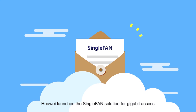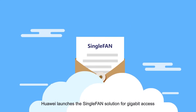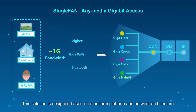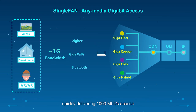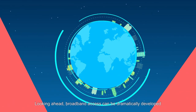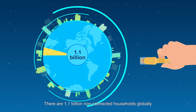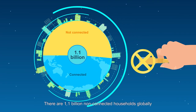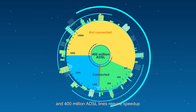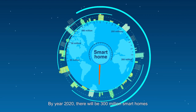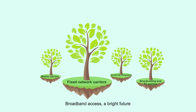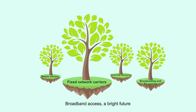Huawei launches the single-fan solution for gigabit access. This solution is designed based on a uniform platform and network architecture, quickly delivering 1000 Mbps access. Looking ahead, broadband access can be dramatically developed. There are 1.1 billion non-connected households globally and 400 million ADSL lines requiring speed-up. By year 2020, there will be 300 million smart homes. Broadband access — a bright future.